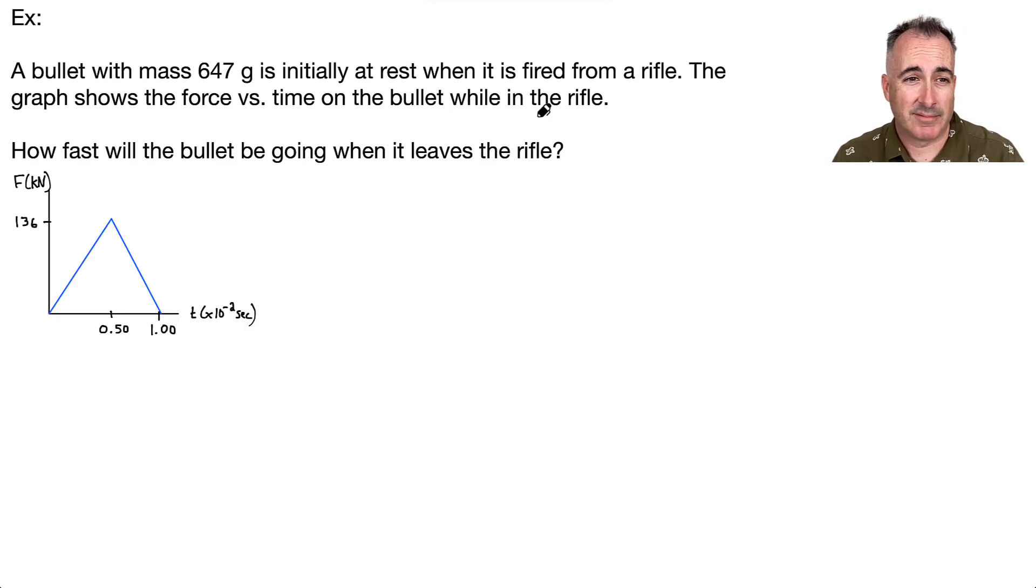Let's look at an example. We're given that we have a bullet with a mass of 647 grams. Watch out. Before I do anything else, I'm going to say that that is 0.647 kilograms. That's going to be important. And it's initially at rest, that means the initial speed is zero. And then it's fired from a rifle. We're told that the graph shows the force versus time on the bullet while it's in the rifle. Notice a few things. Always look at the units. These are kilonewtons, in other words times 10 to the 3. And this right here, we've got times 10 to the minus 2 seconds. That's really important.